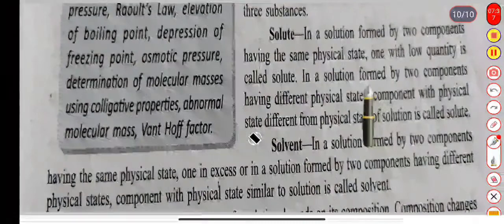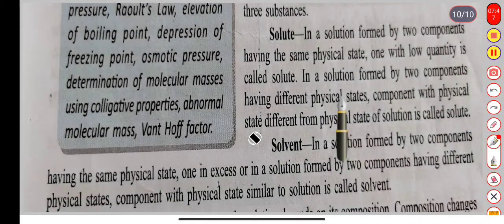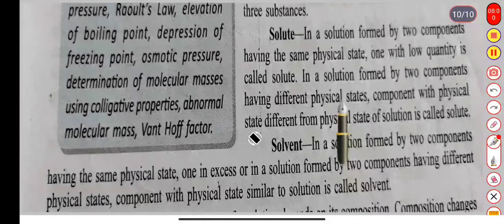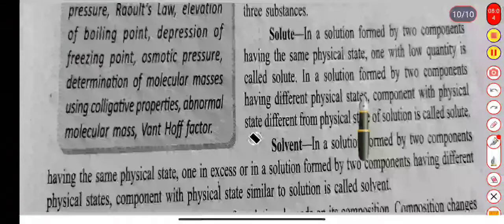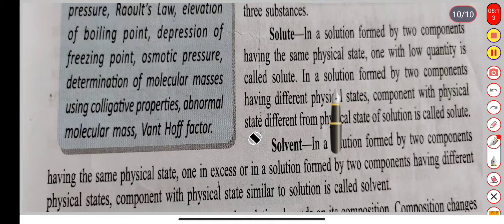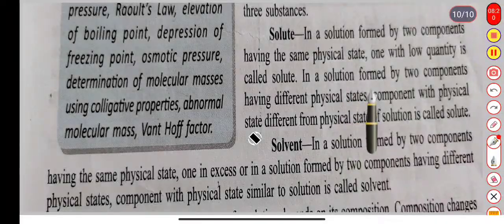What are the two components in terms of physical state? Let's take an example — we mix water with ethanol (alcohol). Both are in liquid form. So in this case, if we use one glass of water and one glass of alcohol, and the alcohol is in lower quantity, then the component in lower quantity is called the solute.